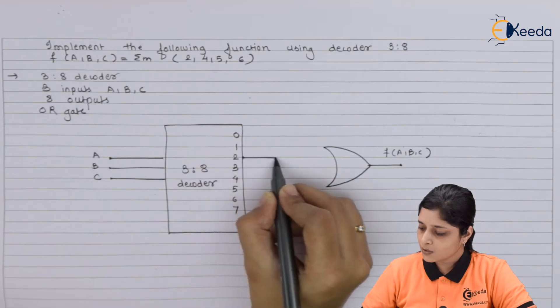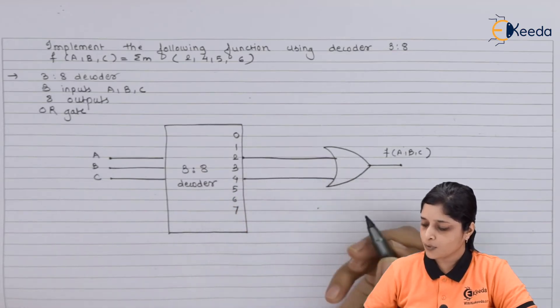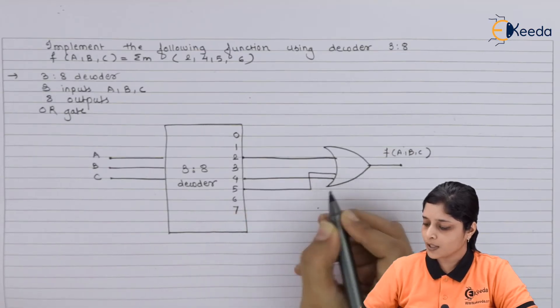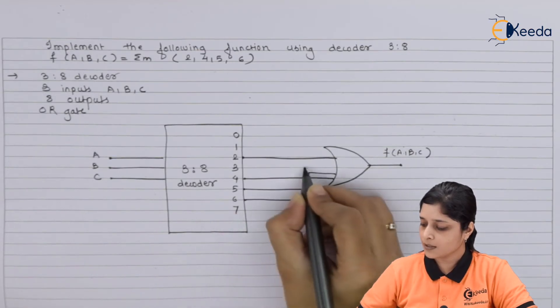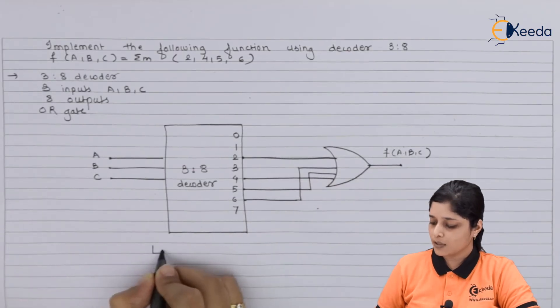So let's start with the connections. Connect 2 over here, connect 4 for OR gate, connect 5 and after that you have to connect 6 to get the realization. So this is the logical diagram.